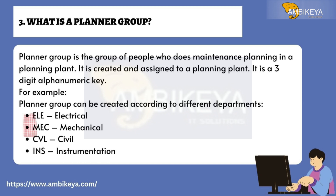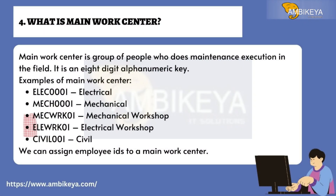Question number four: What is a Main Work Center? A main work center is a group of people who does maintenance execution in the field. It is an eight-digit alphanumeric key. Examples include: LX0001 (Electrical), MECH0001 (Mechanical), MECHWORK01 (Mechanical Workshop), LRK01 (Electrical Workshop), CIVIL001 (Civil). We can also assign employee IDs to a main work center.